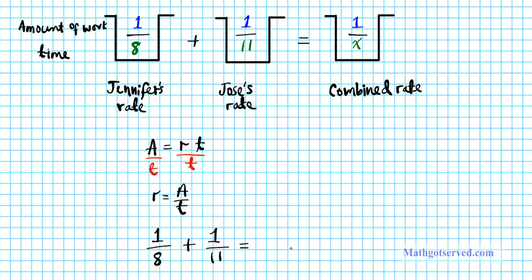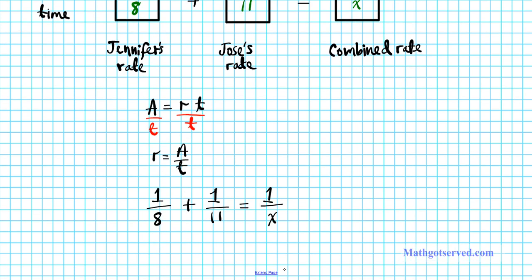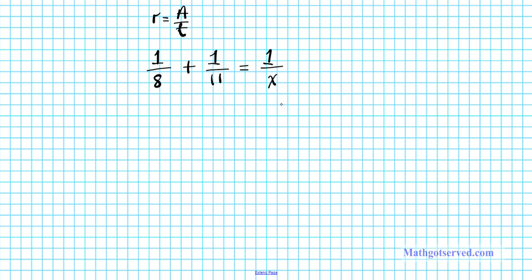equals to their combined rate, same one, and their combined rate is x, what we're looking for. I mean the time is x, which is what we're looking for. So we'll simply solve this algebraic equation and that will give us our final answer.